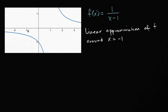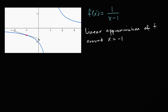What do we mean by that? Let's look at this graph. On this curve, when x is equal to negative one, f of negative one is negative one half, which puts us right over there. What we want to do is approximate it with a line around that point — essentially with the equation of the tangent line. As we get further and further from x equals negative one, the approximation gets worse and worse. But if we stay around x equals negative one, it is as good as you can get for a linear approximation.